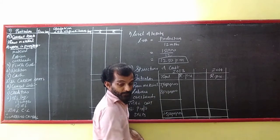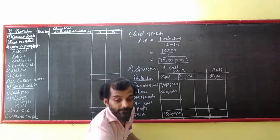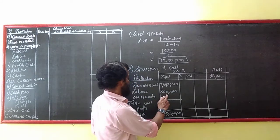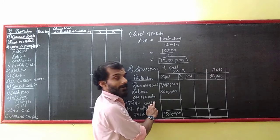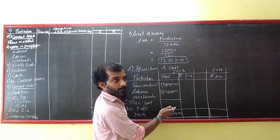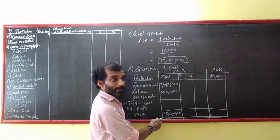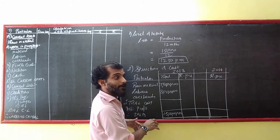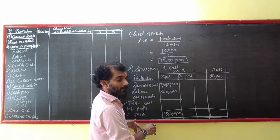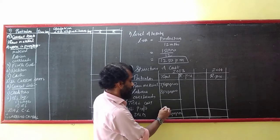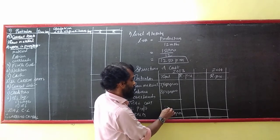Material is 7.50 lakhs — clear. Labor is 3 crore — clear. Overheads — they are not given directly. Sales is 15 crore. And profit is 20%. So 20% of 15 crore? That is 3 crore.